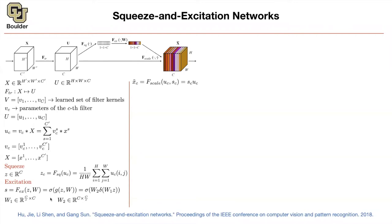For scaling: you take the input at a particular channel — one of the slices — and multiply it by the corresponding attention weight SC. SC is a scalar per channel, multiplied element-wise by the matrix so every entry becomes multiplied by SC. That gives you x̃, your output ready for the next layer. This is just a single block of the entire network.